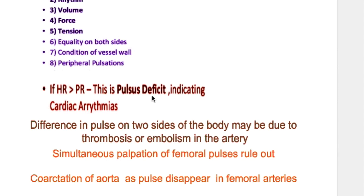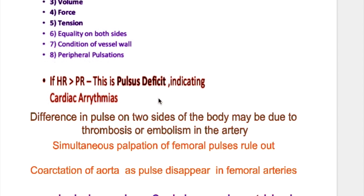What is pulse deficit? If the heart rate is more than the peripheral pulse rate, it is called pulse deficit and indicates a cardiac arrhythmia. Finding an abnormal pulse is an indication to take action. A difference in the pulse on two sides of the body may be due to thrombosis or embolism in the artery. Simultaneous palpation of the femoral pulses can rule out coarctation of the aorta, as the pulse may be diminished in the femoral artery.